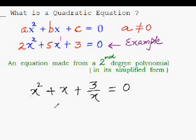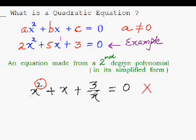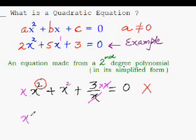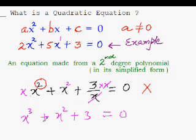What about this next equation? This one is not a quadratic equation, though it deceptively looks like one because of the second degree. But read the fine print: 'in its simplified form.' Let's simplify by getting rid of the denominator x — multiply both sides by x. x times x gives x squared, and x times x squared is x cubed, giving us x³ plus x² plus 3 equal to zero. Now it shows its true color — it is a cubic equation of third degree, and thus not a quadratic equation.